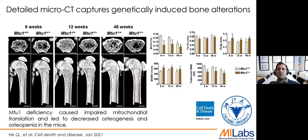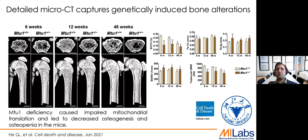There have been several studies looking at the effects of genetic modification on bone alterations. In this case, researchers looked at trabecular and cortical changes due to impaired mitochondrial translation, which led to decreased osteogenesis and osteopenia in mice. The knockout mouse showed tremendous bone loss, with changes in trabecular spacing, trabecular thickness, and bone mineral density. This was a very recent paper published in Cell Death and Disease.